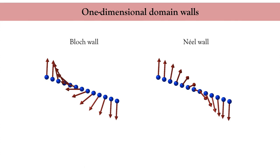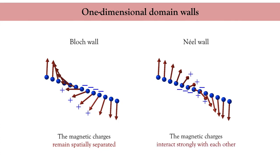What is the difference between these two walls? In the Bloch wall, the magnetic charges remain away from each other all along the wall, so you would expect the dipolar energy to be somewhat satisfied. In the Néel wall, the magnetic charges strongly interact in the center of the wall, so you expect a large concentration of dipolar energy there. From an energetics point of view, Bloch walls are more likely to occur than Néel walls.